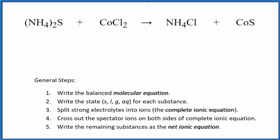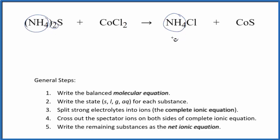So we have our molecular equation here. I can see that we have two chlorines here and just one here. You can also see that I have these two ammonium ions and only one ammonium ion here. So to balance this equation, it looks like all I have to do is put a 2 here in front of the ammonium chloride.